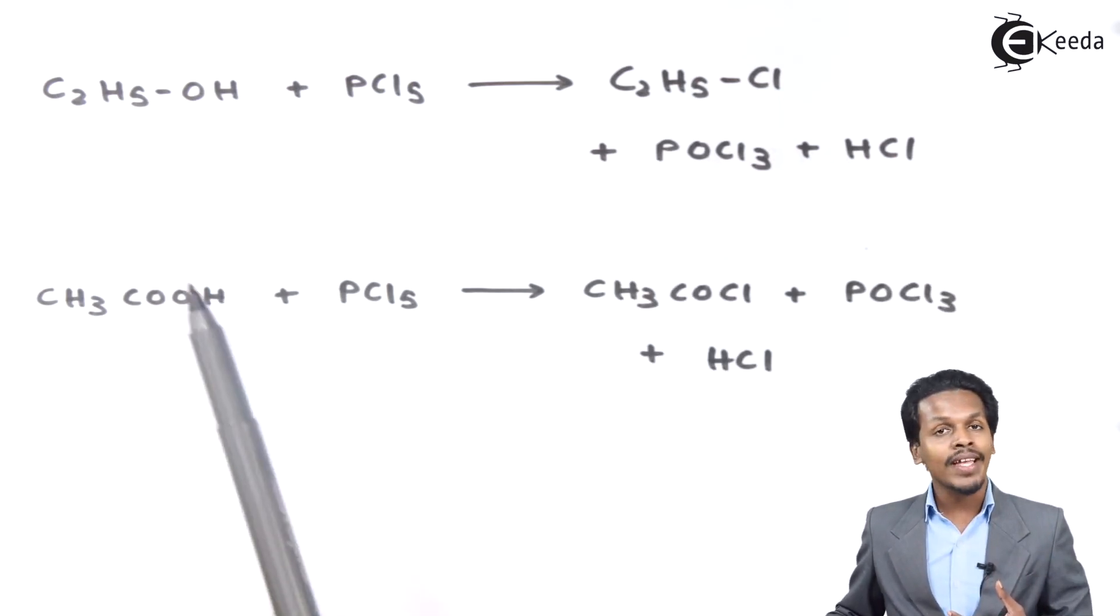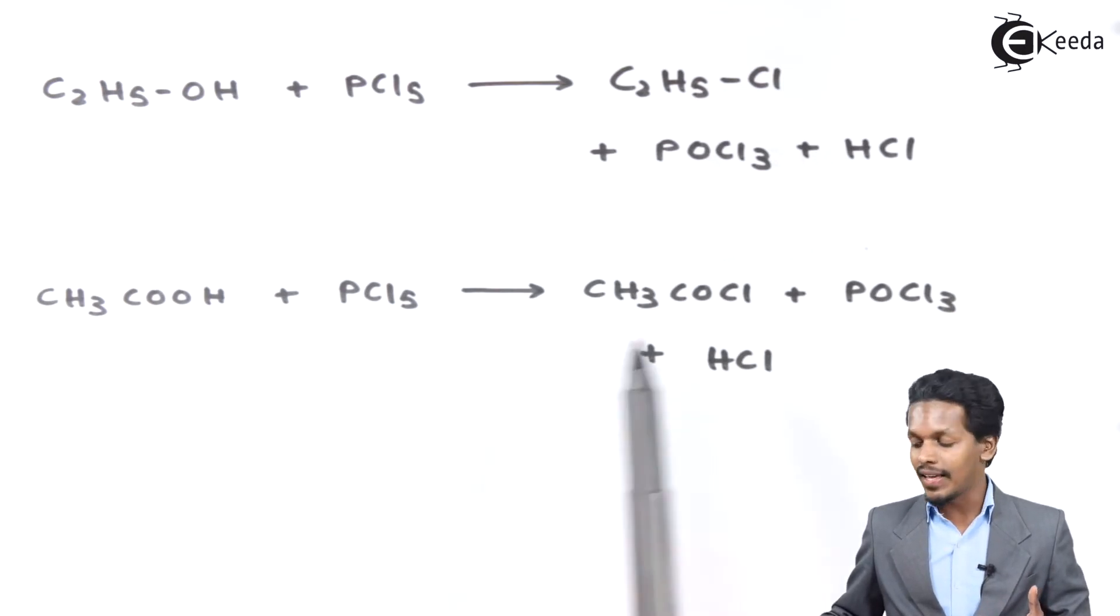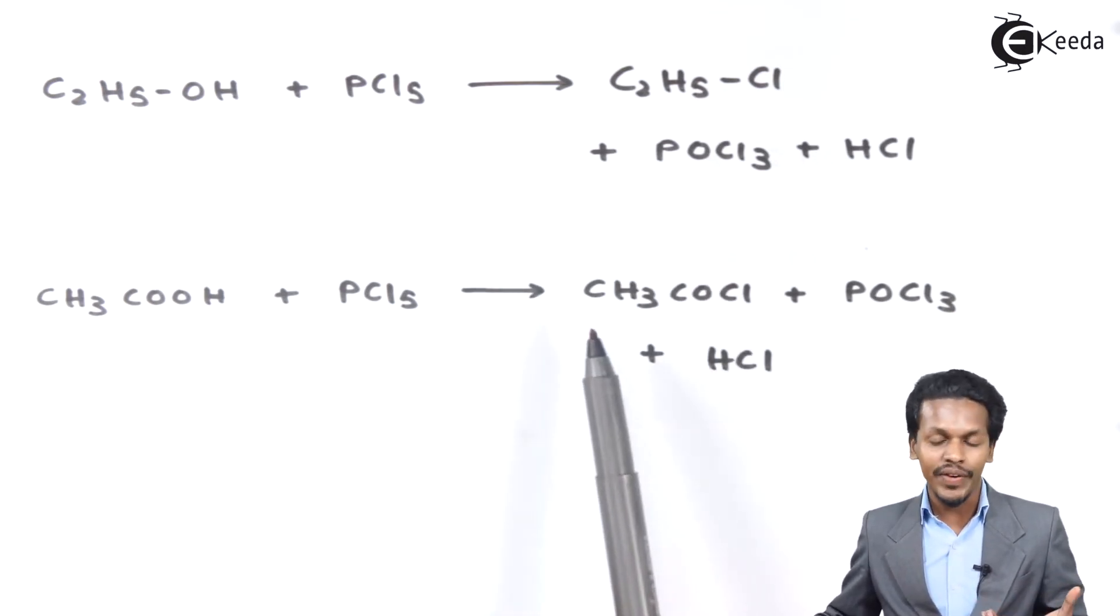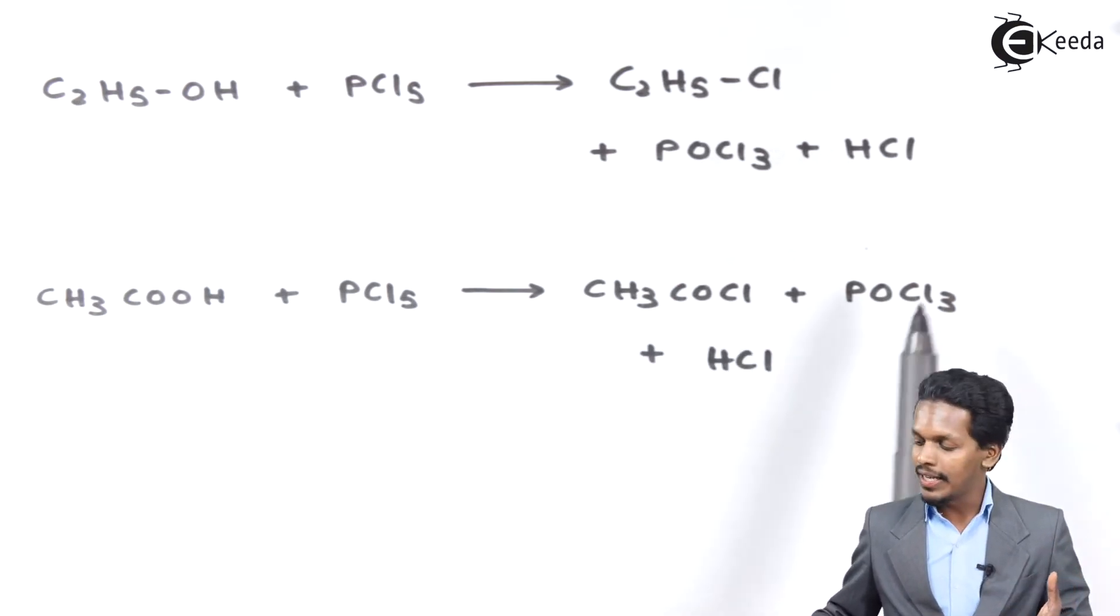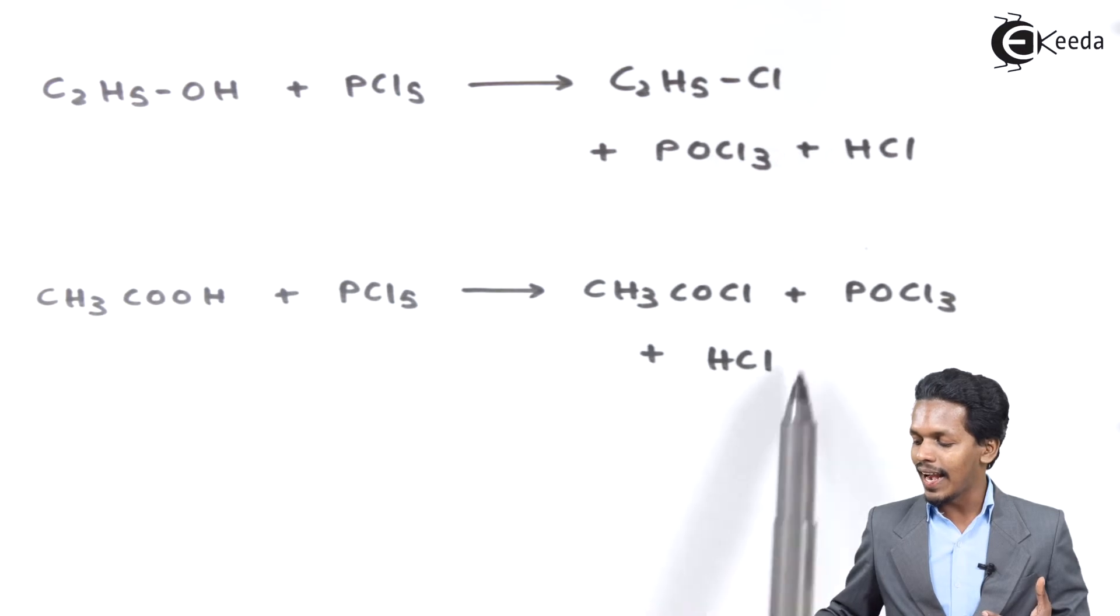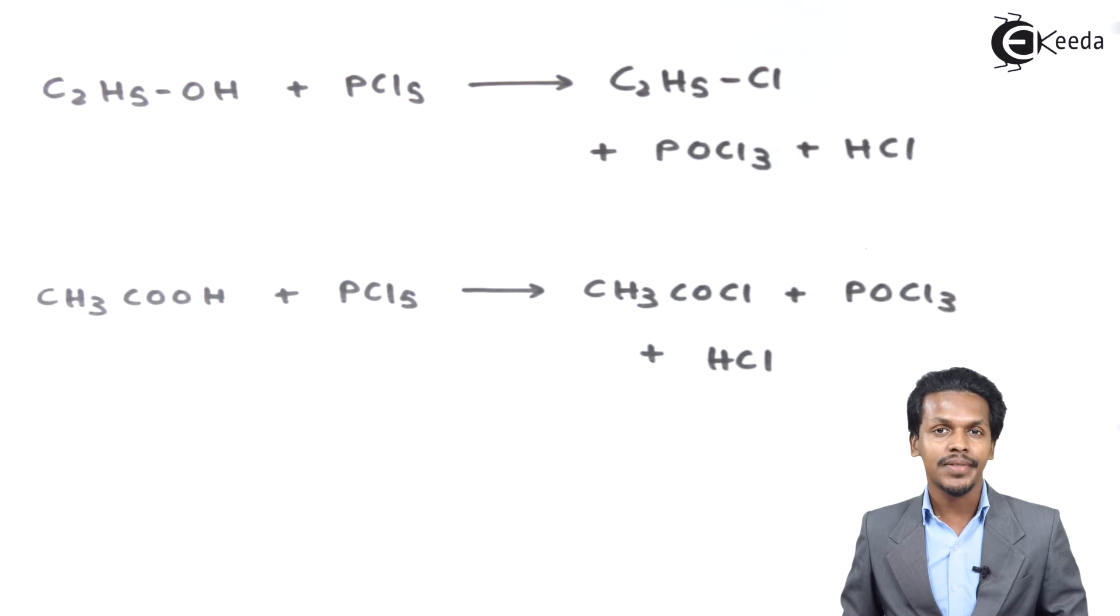Suppose if it is reacted with organic acids like acetic acid. When acetic acid is treated with PCl5, the product we get is CH3COCl, that is known as acetyl chloride, along with POCl3 and HCl as a by-product. These were the two reactions, and now let me talk about the last one.